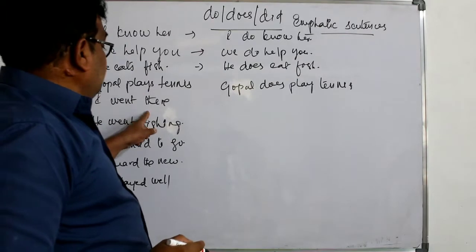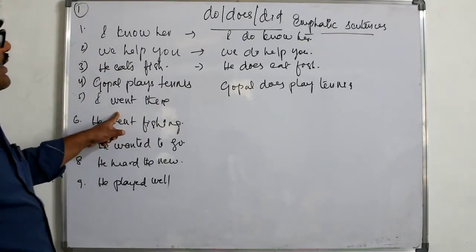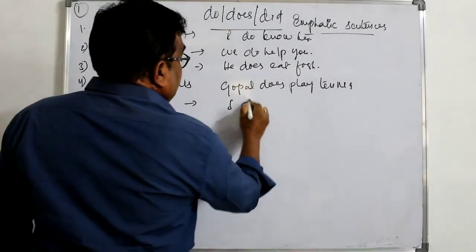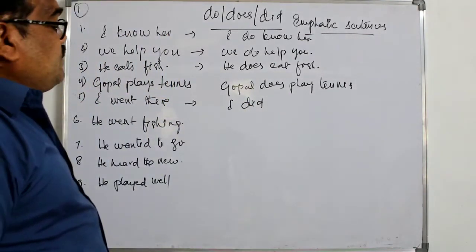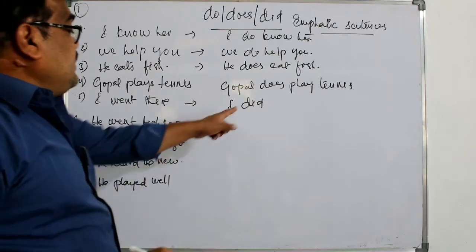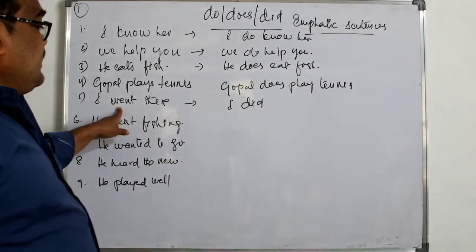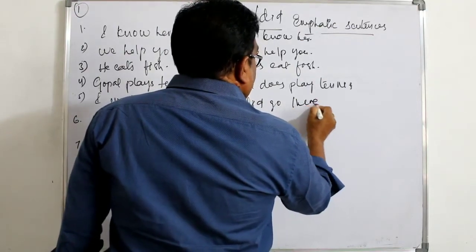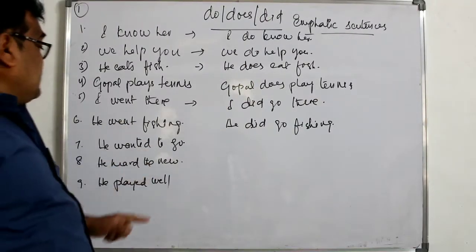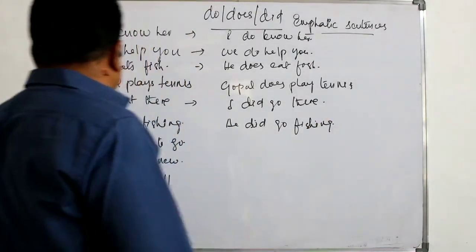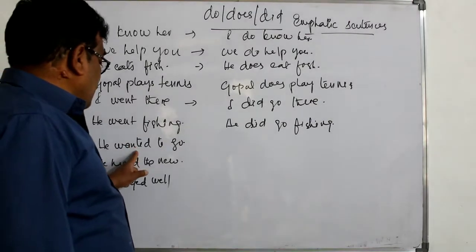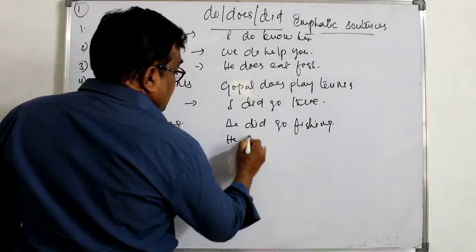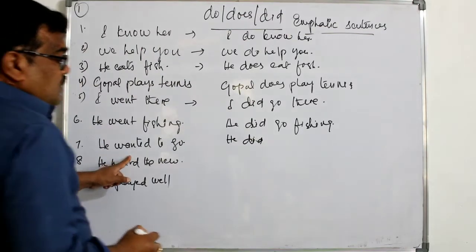Next: 'I went' — this is in past tense, so I will use did. After do, does, or did we must use the V1 form. The V1 form of 'went' is 'go,' so the emphatic sentence is: 'I did go.' Another example: 'He went fishing' becomes 'He did go fishing.'